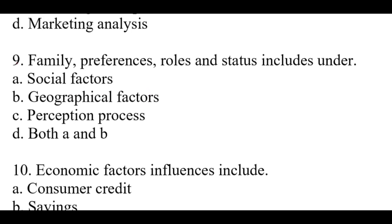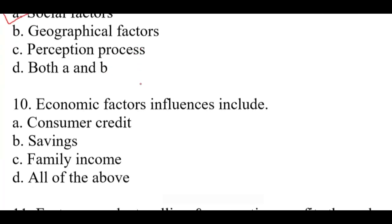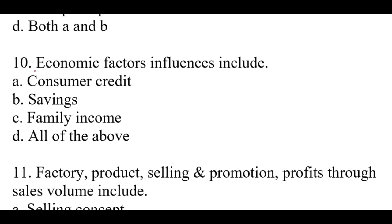Question number nine: Family preference, roles and status includes under — right option is A: Social factors. Question number ten: Economic factors influences include — right option is D, all of the above: consumer credit, savings, and family income.